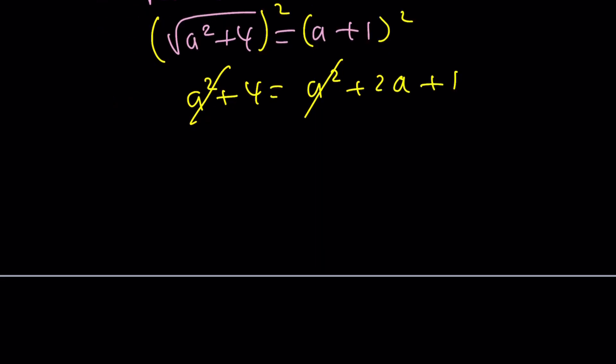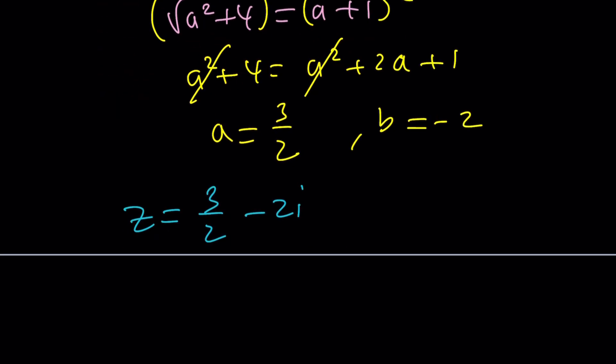And a squared is also going to cancel out giving you a really nice result. And from here, 2a is going to be 3, a is going to be 3 halves. What is b? b is negative 2. So the only solution that you get from here for z is going to be 3 halves minus 2i. That's going to be the answer.